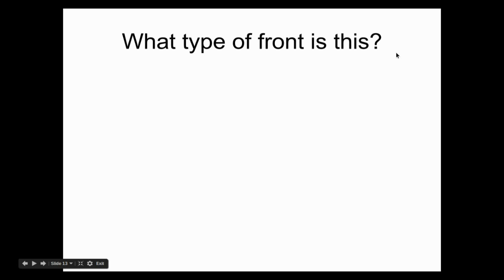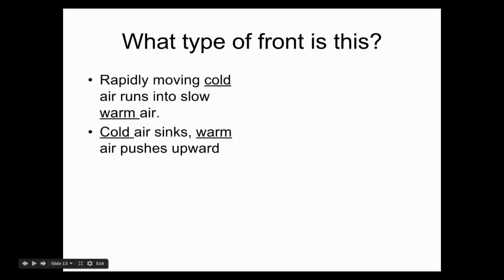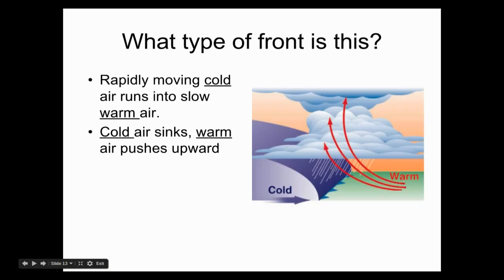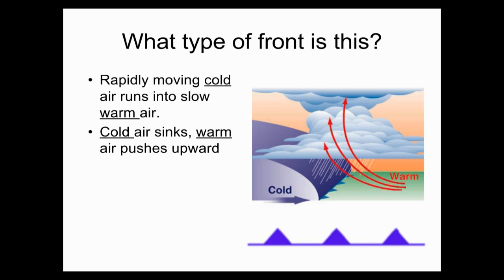Let's take a look at four different types of fronts. Remember that cold air is very dense and tends to sink, while warm air is less dense and tends to rise. As rapidly moving cold air runs into slow-moving warm air, that dense cold air slides under the lighter warm air and pushes it upward. This is what happens in a cold front. Cold fronts are described using a series of blue triangles — blue symbolizes cold — and the triangles are always pointed in the direction the front is moving.